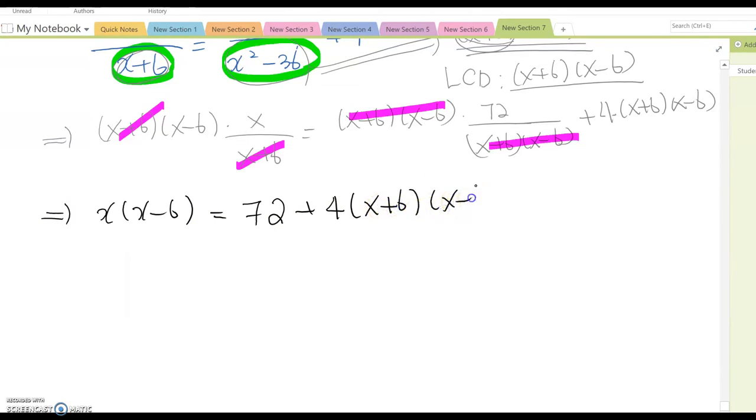x times x minus 6 equal to 72 plus 4 times x plus 6 times x minus 6. Distribute, then x squared minus 6x equal to 72 plus 4 times x squared minus 36.